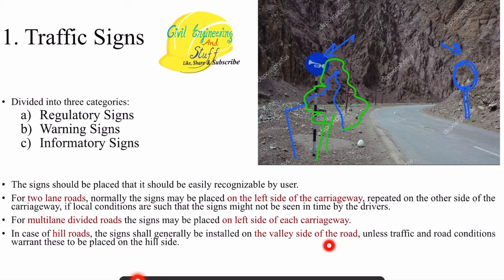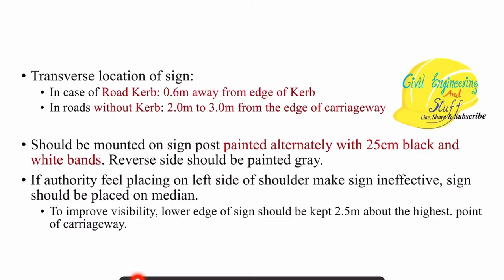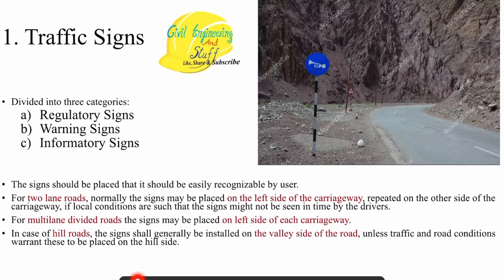In case of a hilly road, traffic signs are installed on the valley side. If we have a road with a curve, the traffic sign will be installed at 0.6 meters away from the edge of the curve. If the road does not have a curve, the traffic sign will be located at 2 to 3 meters from the edge of the carriageway.